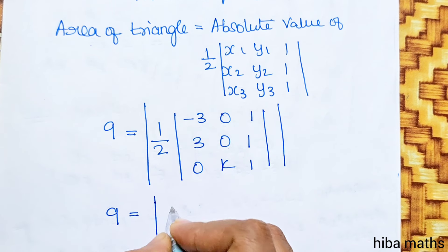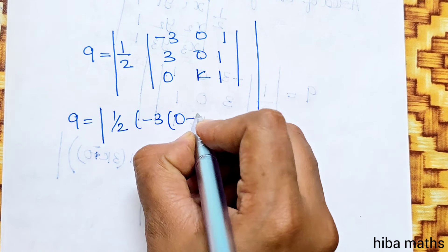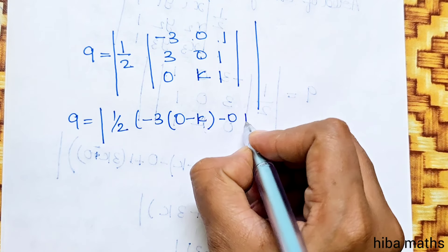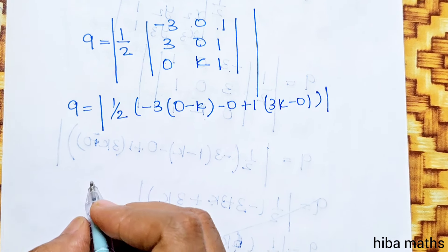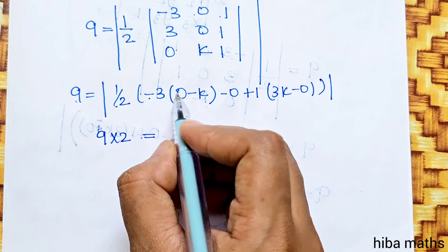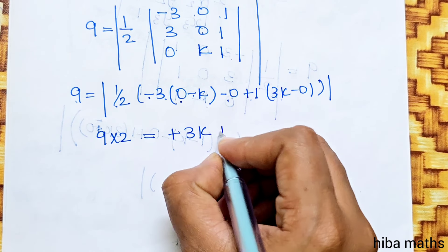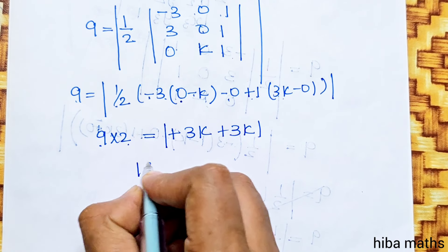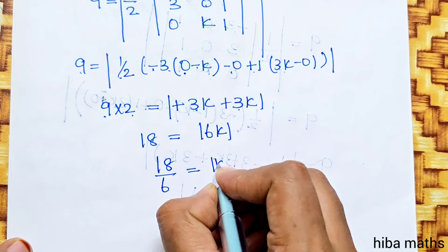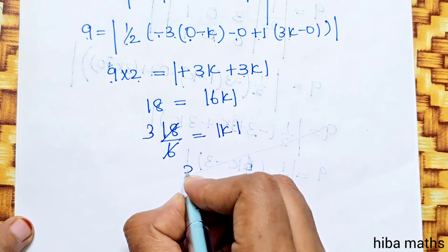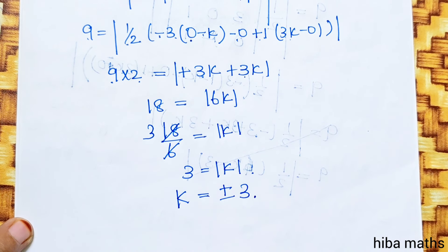9 equals 1/2 times the determinant. Computing row by column: -3 times (0 minus k) plus 0 plus 1 times 3k equals -3 times (-k) plus 3k which gives 3k plus 3k equals 6k. So 9 equals 1/2 times 6k, thus 18 equals 6k, giving k equals 3. Therefore modulus of k equals plus or minus 3.